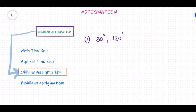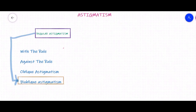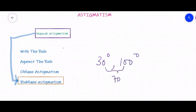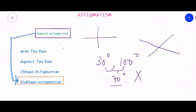An example of oblique astigmatism: one axis at 30 degrees and one axis at 120 degrees — not 90 and 180, but the difference is 90 degrees, so they are still perpendicular. The last type of regular astigmatism is bioblique astigmatism. In bioblique astigmatism, the two principal meridians are not even at right angles to each other. For example, one can be at 30 degrees and the other at 100 degrees — a difference of 70 degrees, not 90. The axes are oblique and not perpendicular to each other.